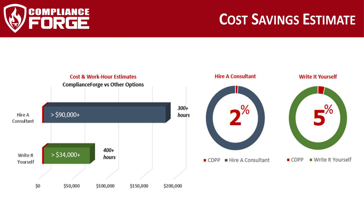The CDPP is reasonably priced at $1,800, which is approximately two percent of the cost to hire a consultant or five percent of the cost for your internal staff to write equivalent documentation. When you consider your internal staff generating comparable documentation, it would take over 400 internal staff hours and cost at least $34,000 in internal staff-related expenses — approximately four to eight months where your staff would be diverted from other work.